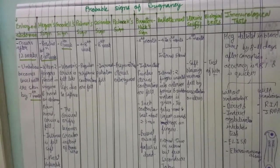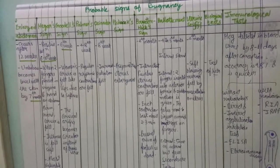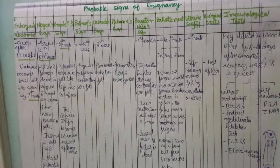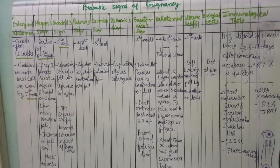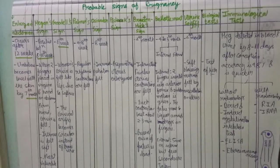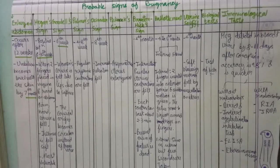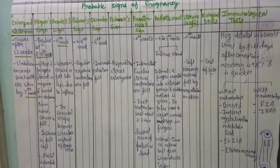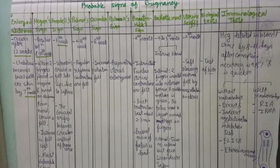Ballottement is positive during the fourth to fifth month of pregnancy. In internal (vaginal) ballottement, two fingers are inserted into the anterior fornix and a sudden upward motion is given, causing the fetus to move up in the liquor amnii; after a moment the fetus drops down on the fingers like a ball bouncing back. In external ballottement, a sudden motion is given to the abdomen over the uterus, and in a few seconds the rebound of the fetus can be felt.